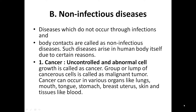Uncontrolled and abnormal cell growth is called cancer. A group or lump of cancerous cells is called a malignant tumor. Cancer can affect the mouth, tongue, stomach, breast, uterus, skin, and tissues like blood.